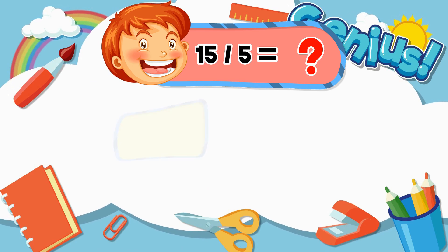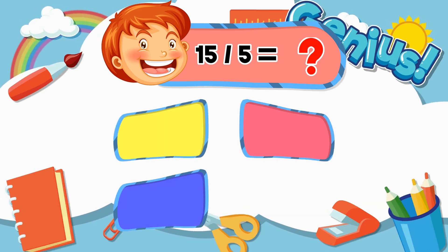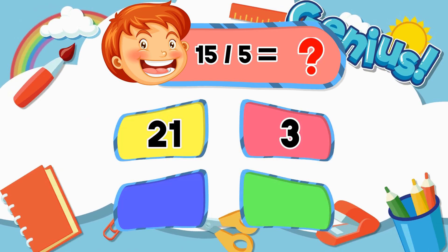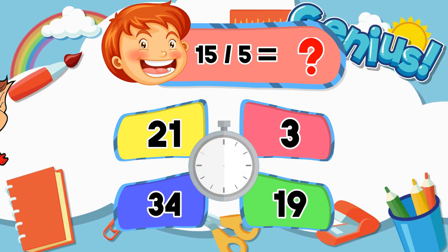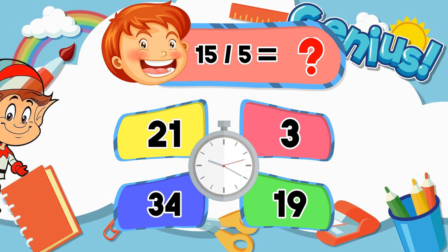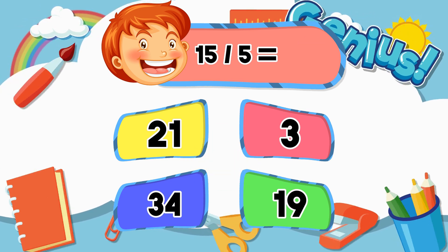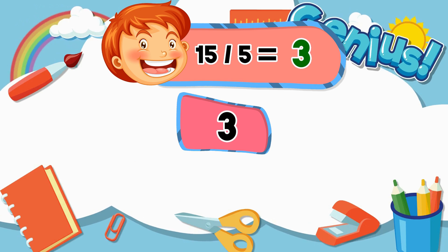What is 15 divided by 5? Options: 21, 21, 3, 34, 19. Answer: 3.